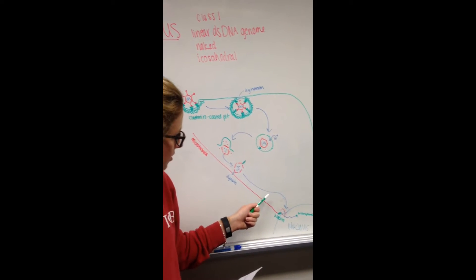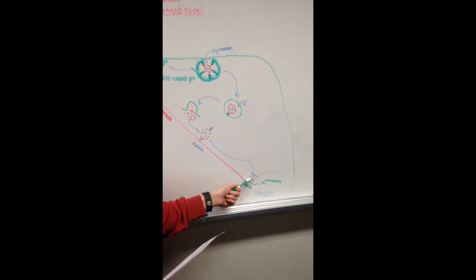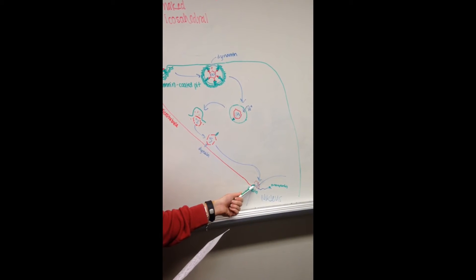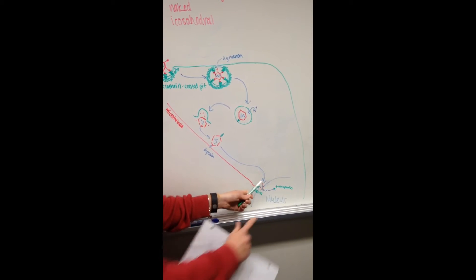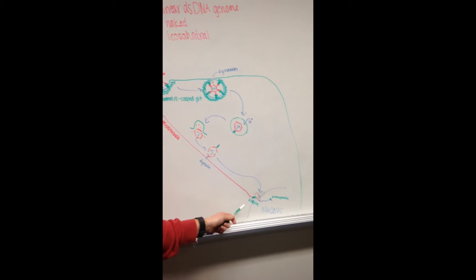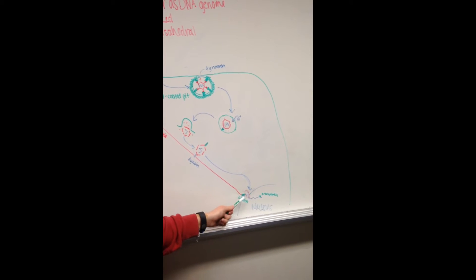Upon reaching the nucleus, the capsid binds to the nuclear pore and to kinesin which pull in opposite directions and rip the capsid apart. Transportant attaches to the genome and pulls it into the nucleus to be replicated.